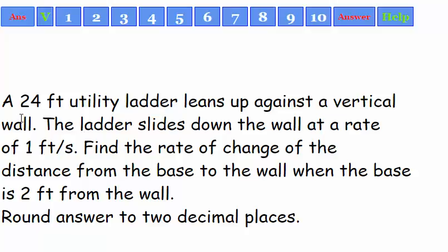We've got a 24 foot utility ladder that leans up against a vertical wall. The ladder slides down the wall at a rate of 1 foot per second. Find the rate of change of the distance from the base to the wall when the base is 2 feet from the wall. We're going to round our answer to two decimal places.